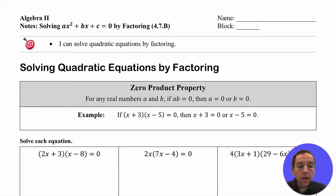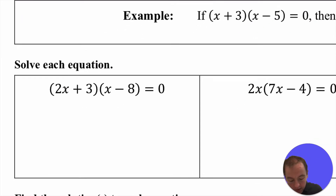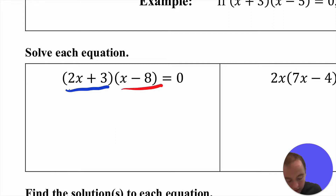We're jumping back into solving quadratic equations. One great way to solve quadratic equations is to use the zero product property on a factored expression. When it's factored, you want it to equal zero to use the zero product property. If you multiply two different things and it equals zero, then at least one of those two things has to be equal to zero.